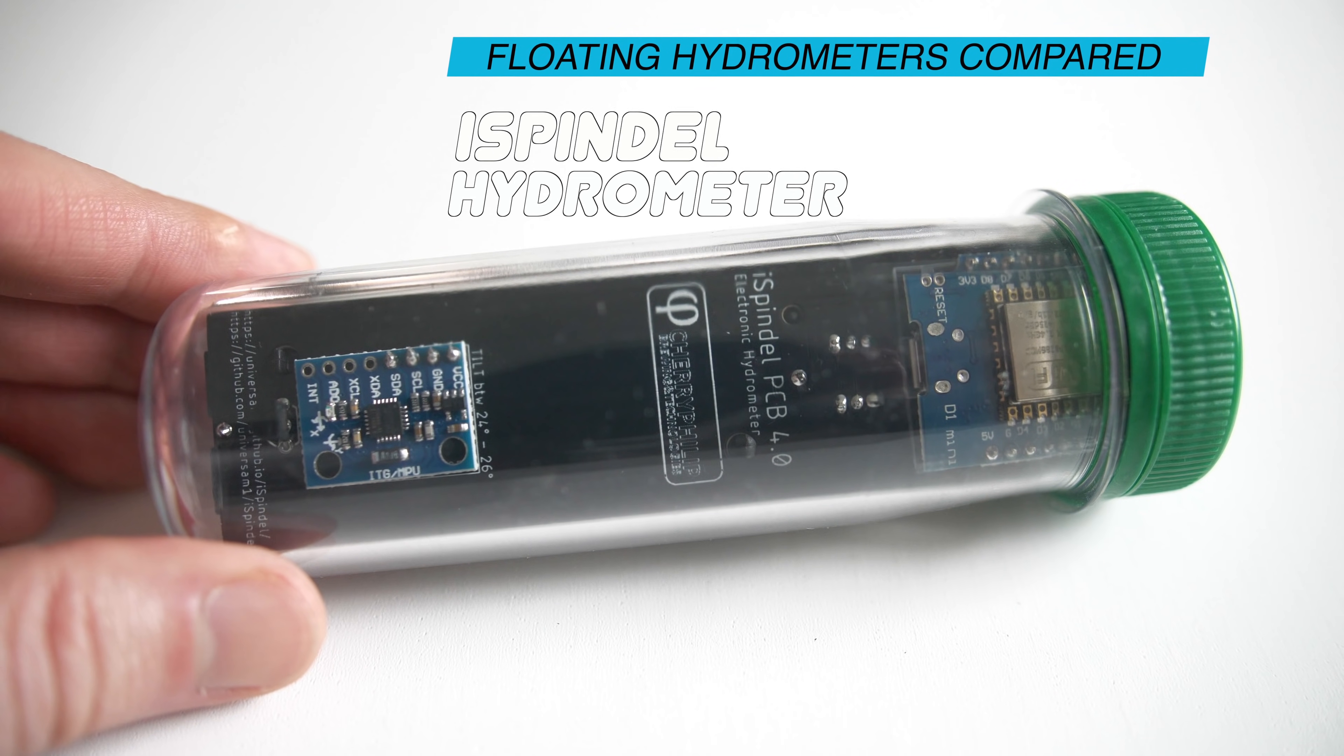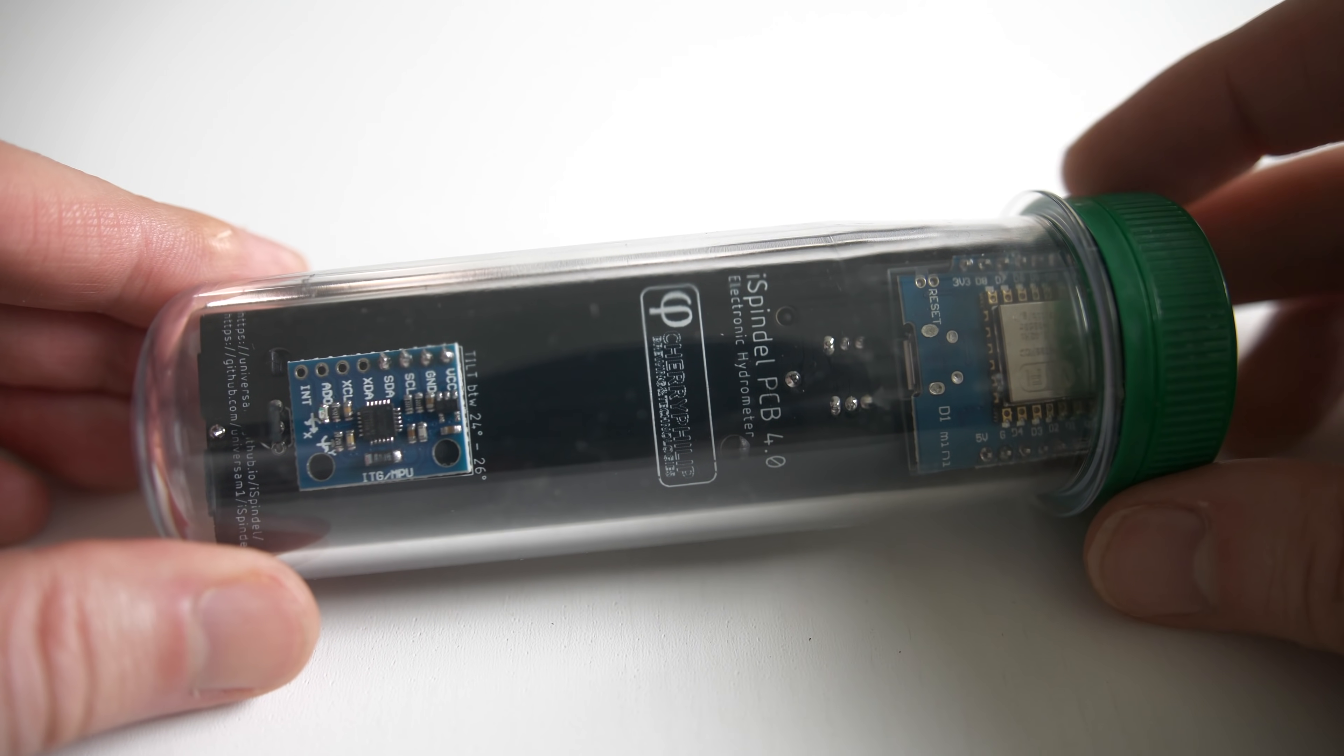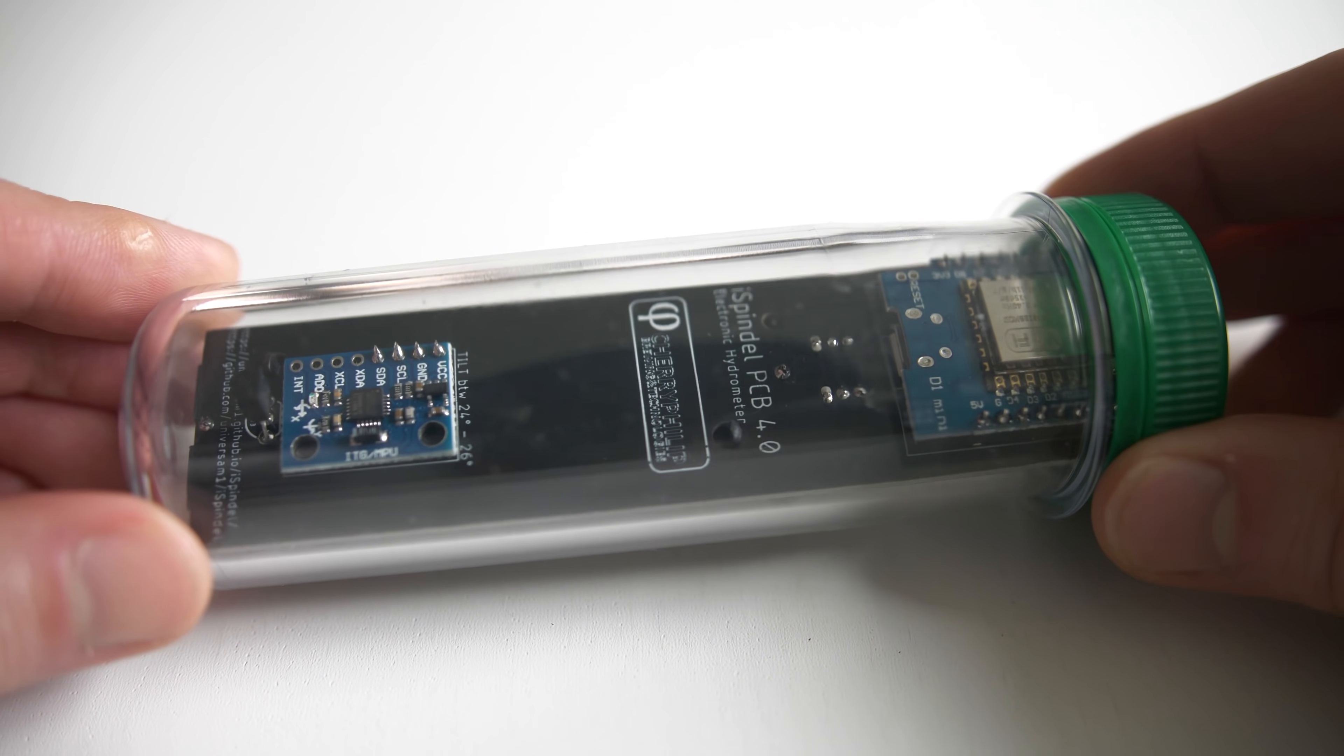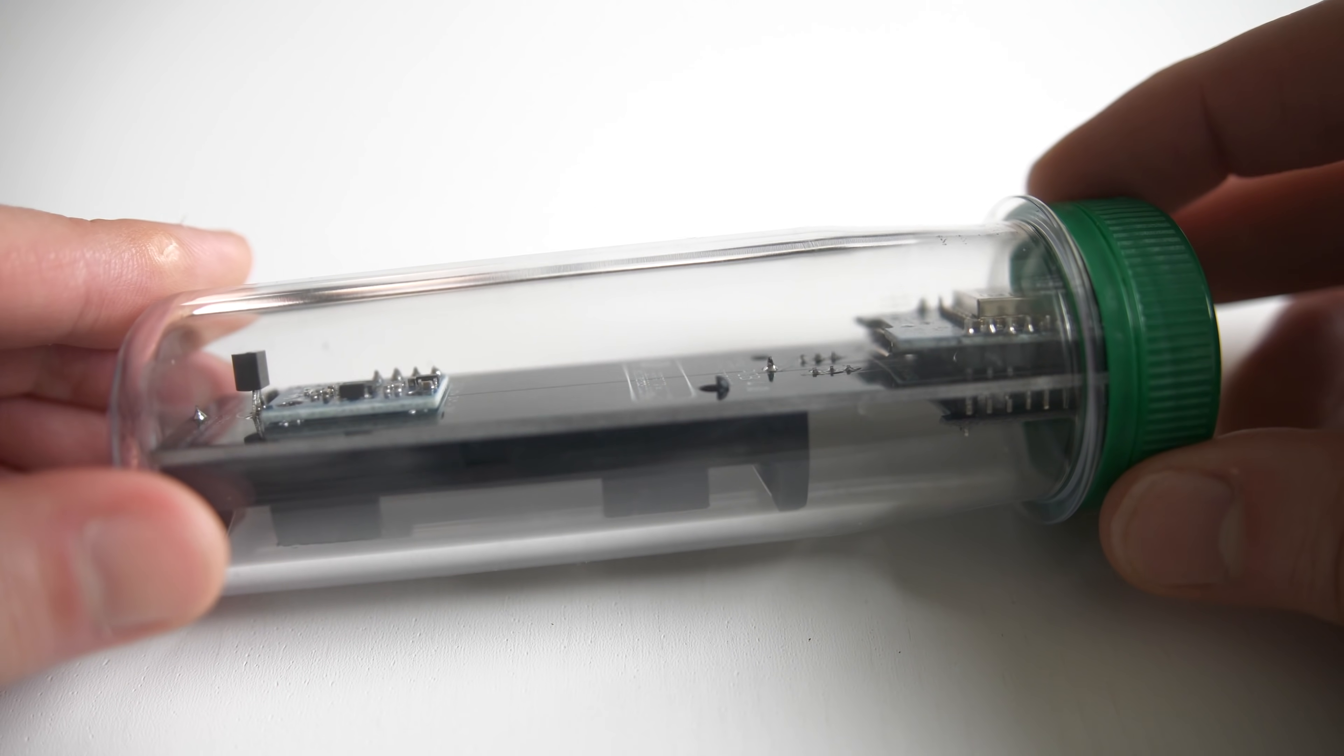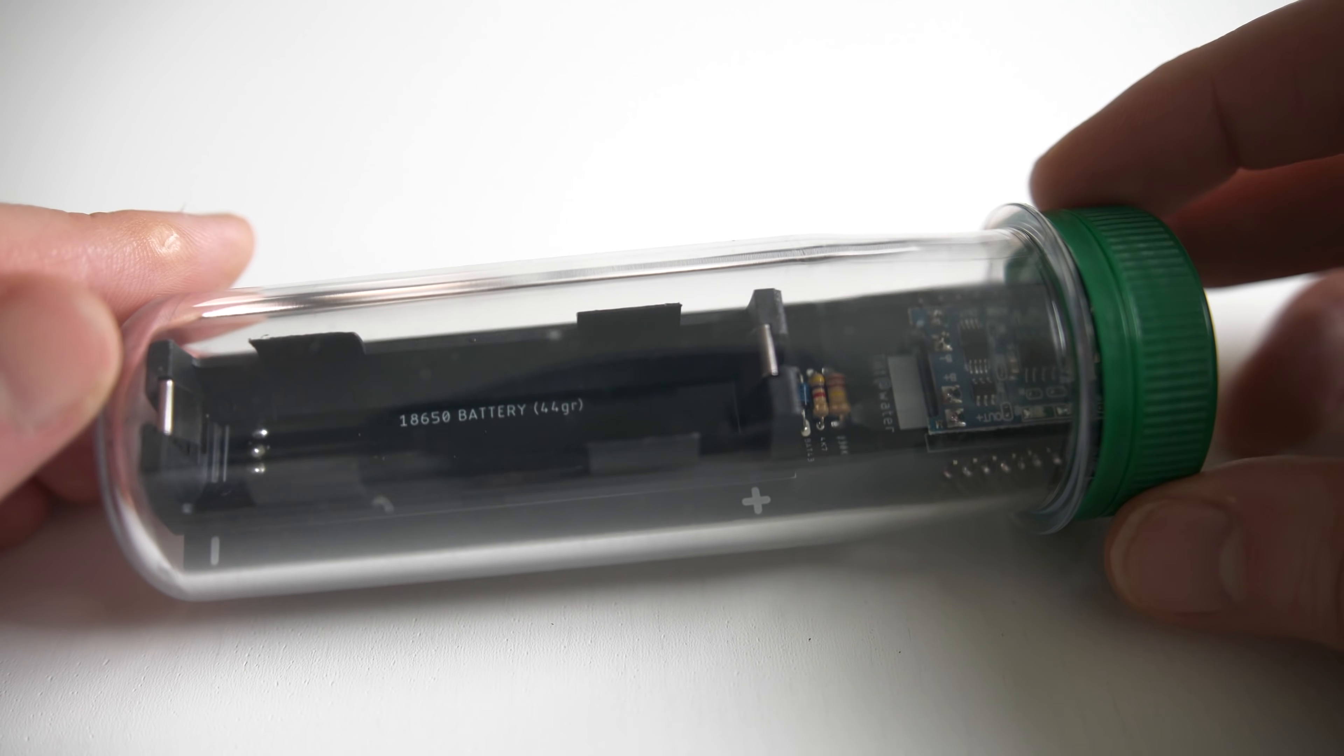Next up we have the iSpindle. The iSpindle is described on its website as a DIY electronic hydrometer. It can be bought in kit form for around 30 Euros or 30 US Dollars. To put one together you will need some electronics and computer skills.